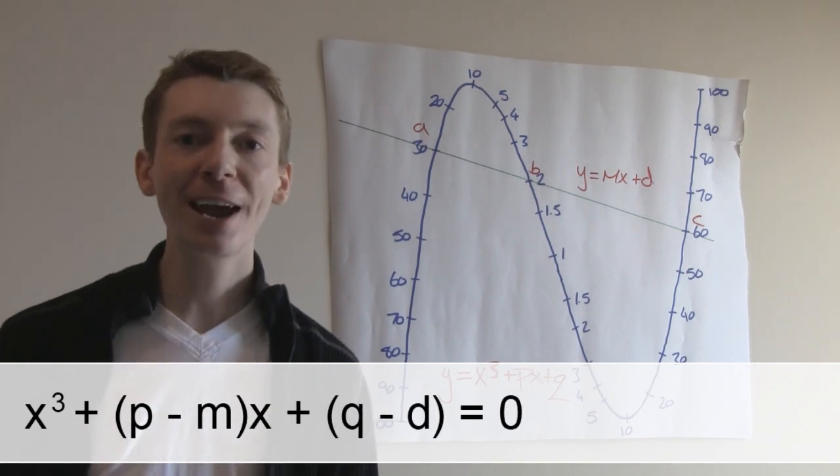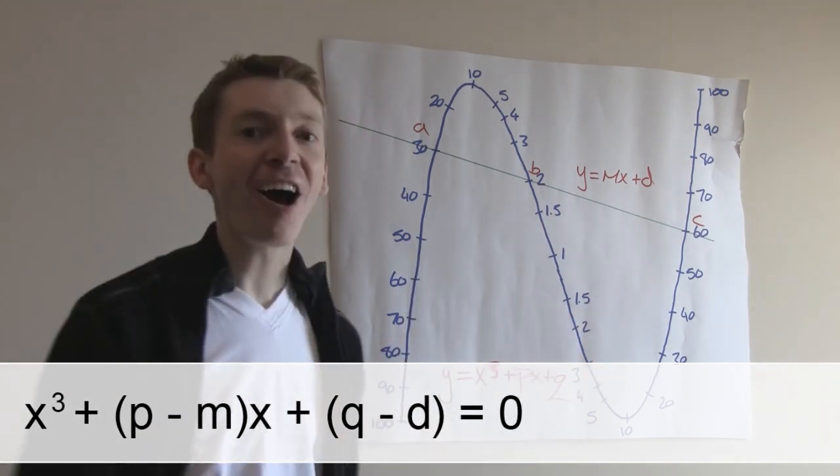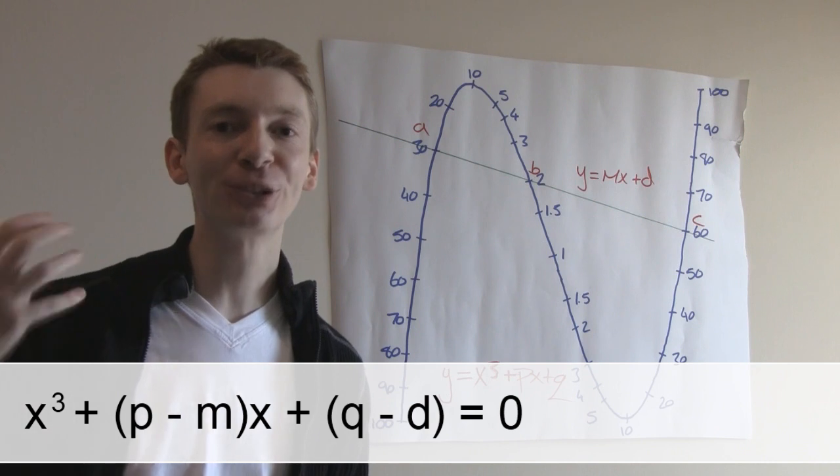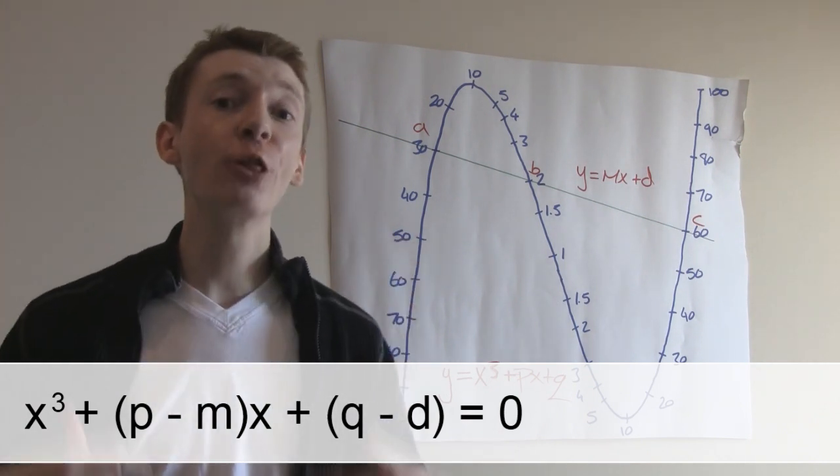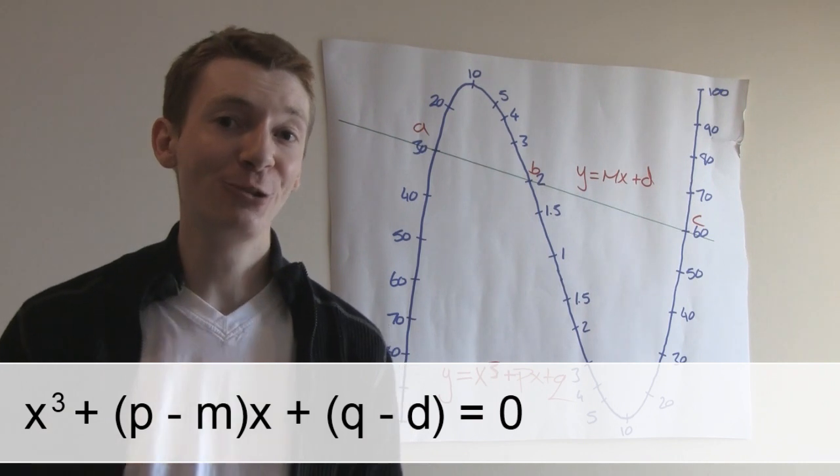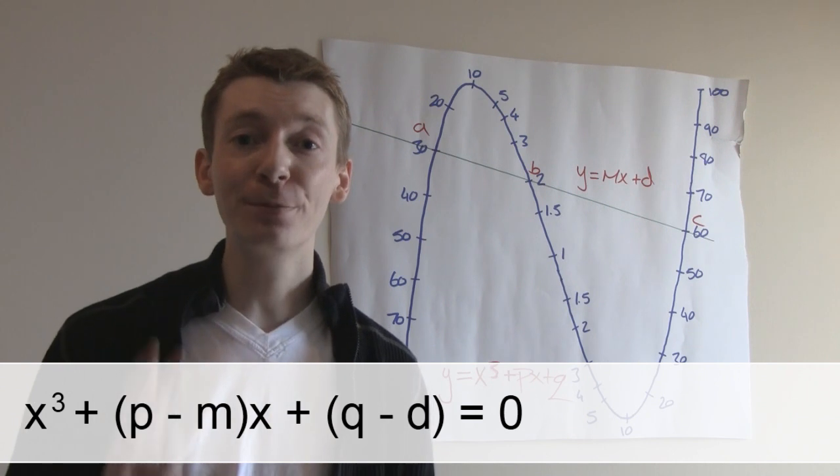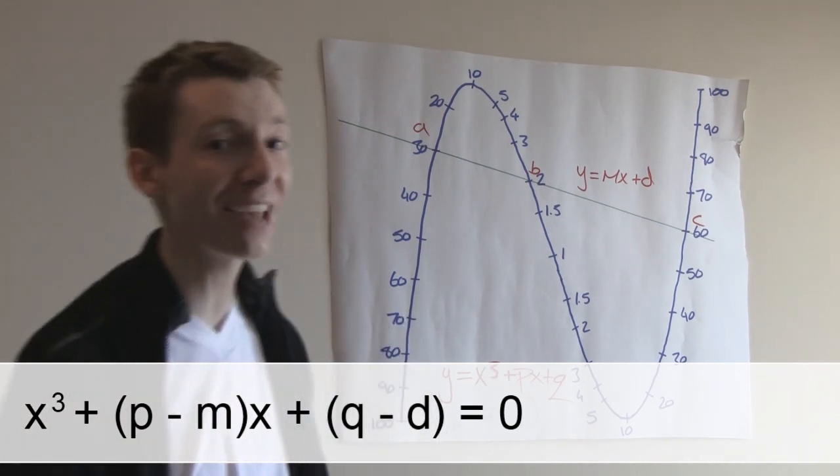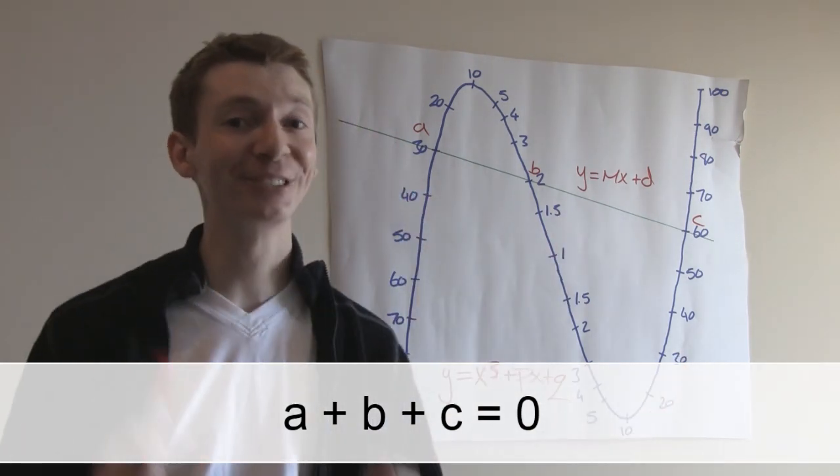Or we could subtract mx plus d from both sides, and we get a new depressed cubic. And a, b and c are the solutions to this new depressed cubic equal to zero. And that means a, b and c are the roots of this new depressed cubic. And we know the three roots of a depressed cubic are equal to zero when we add them together. That means a plus b plus c equals zero.